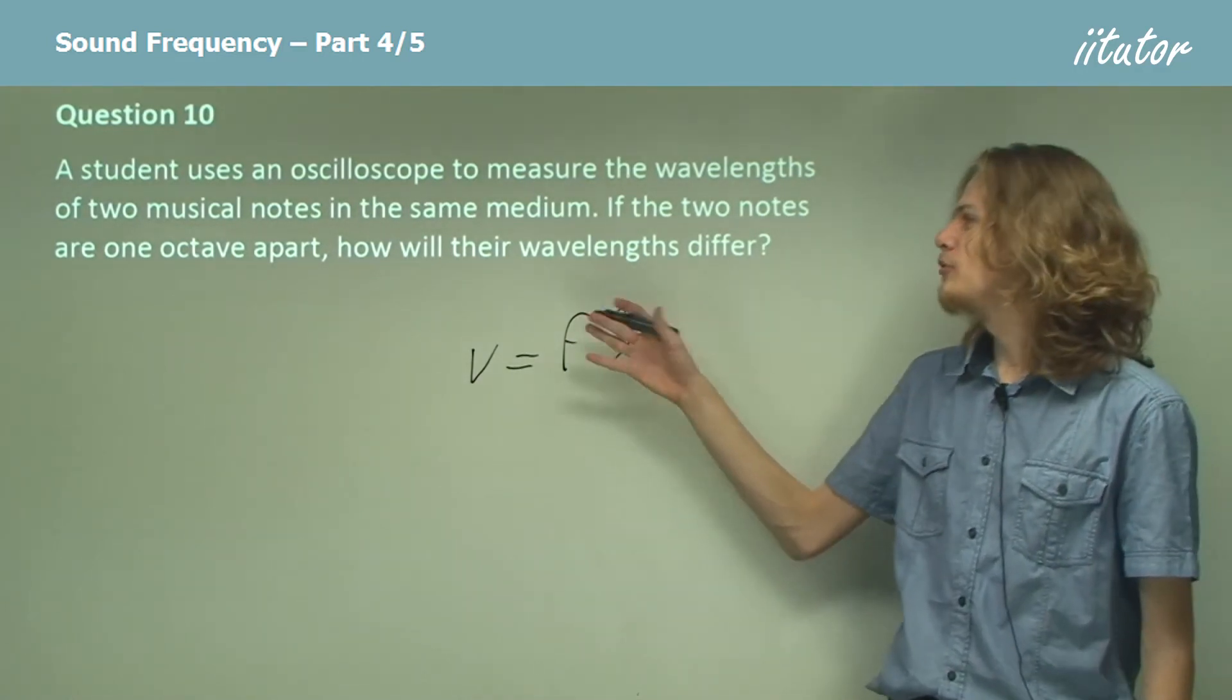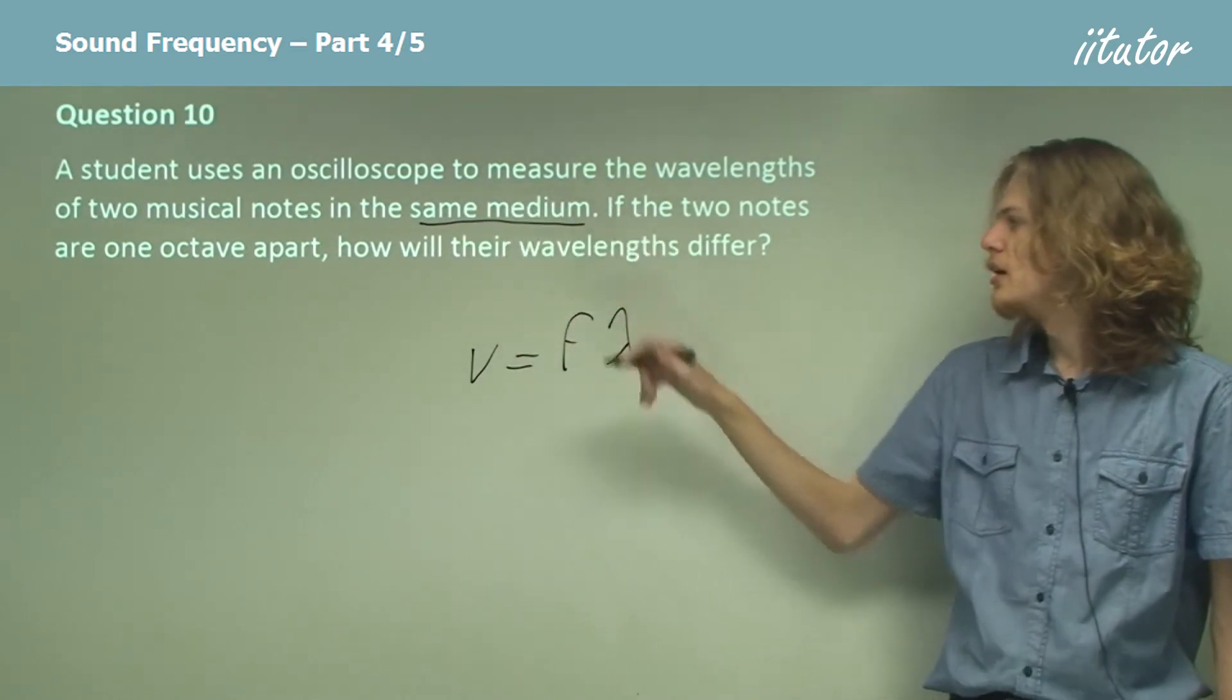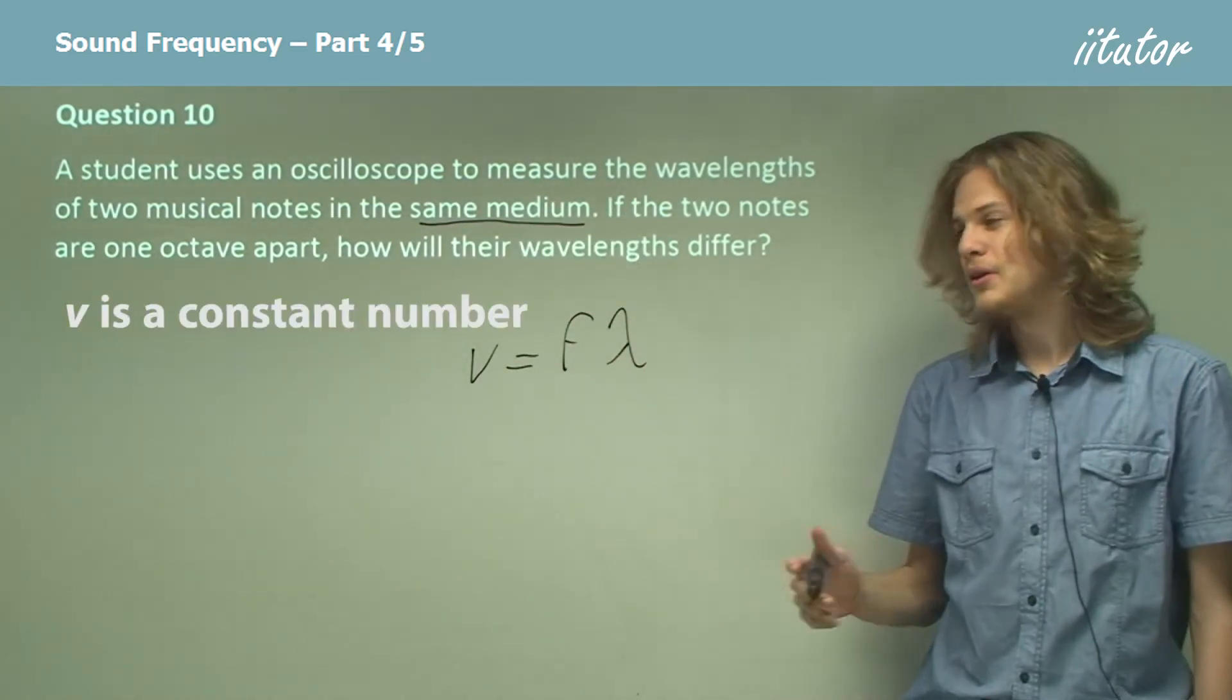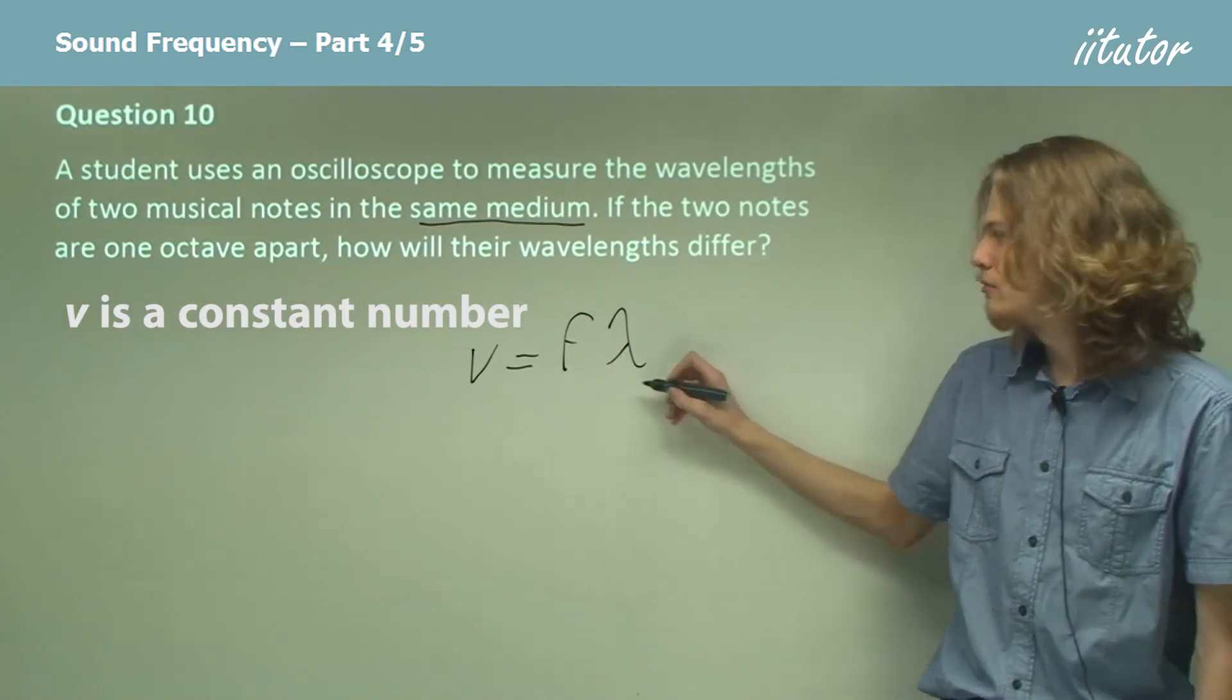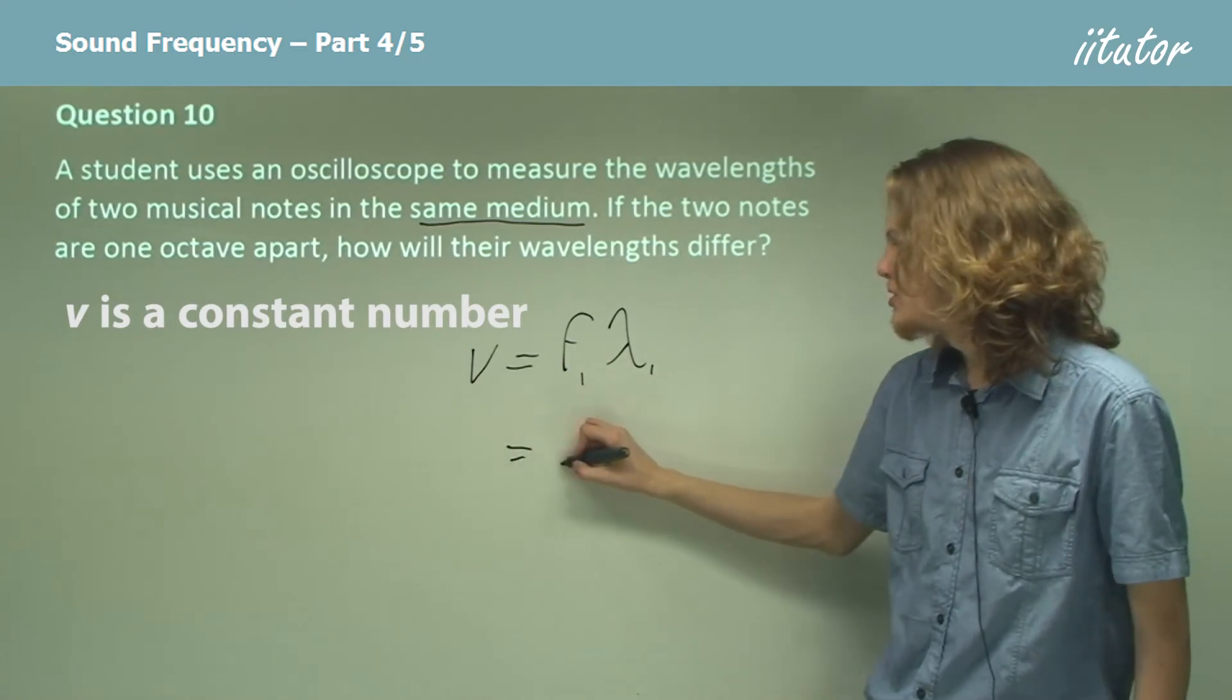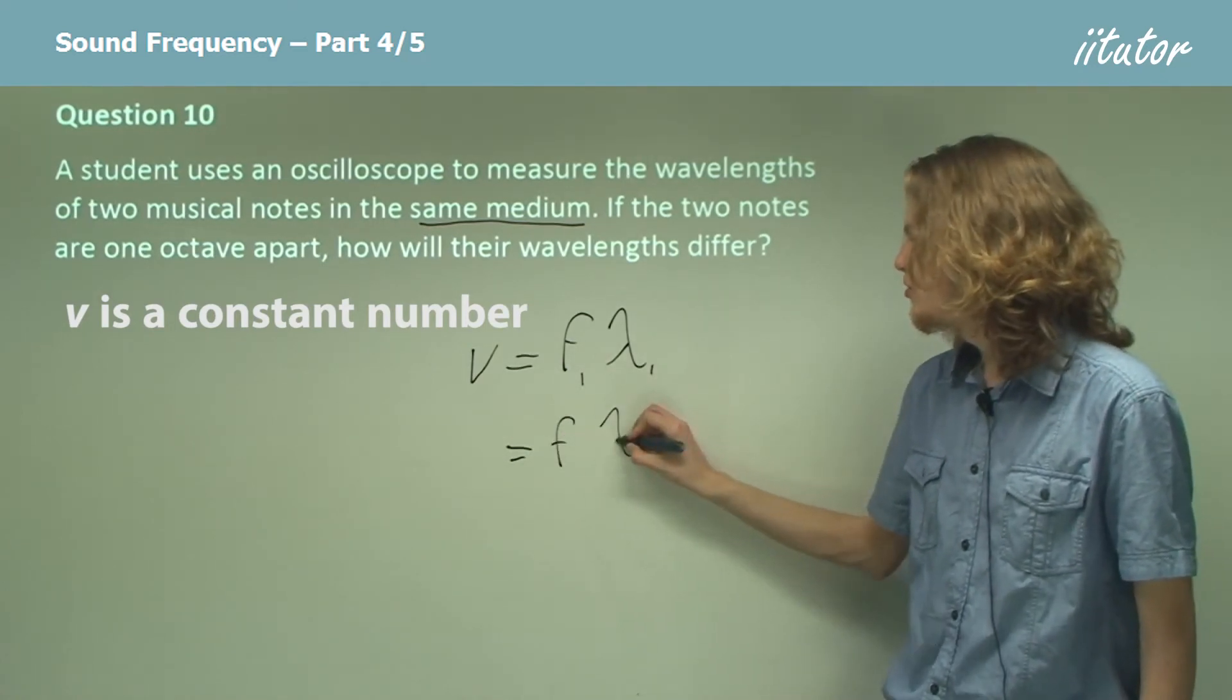If the two sound waves are both traveling in the same medium, that means that v is going to be a constant number, so that means that frequency times wavelength for the first wave will equal the frequency times wavelength for the second wave.